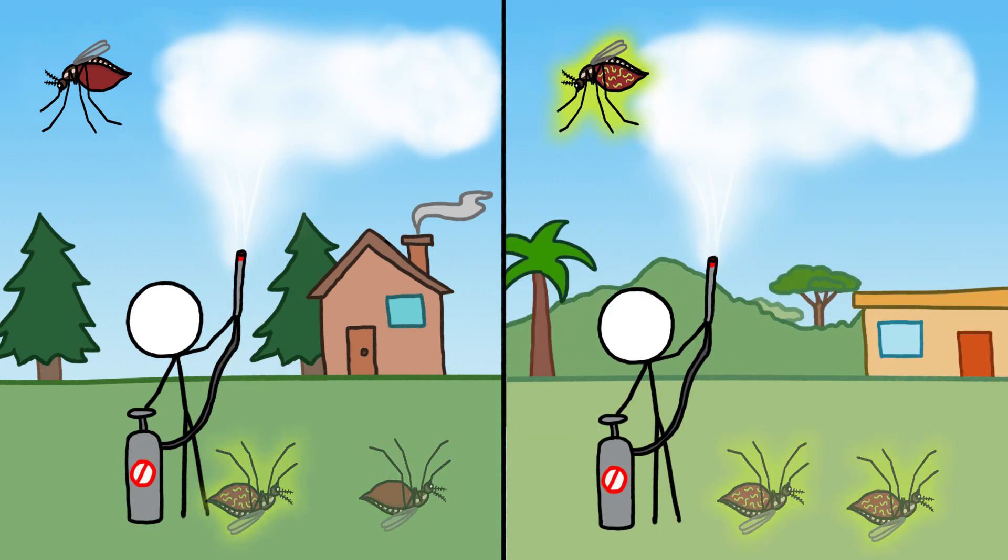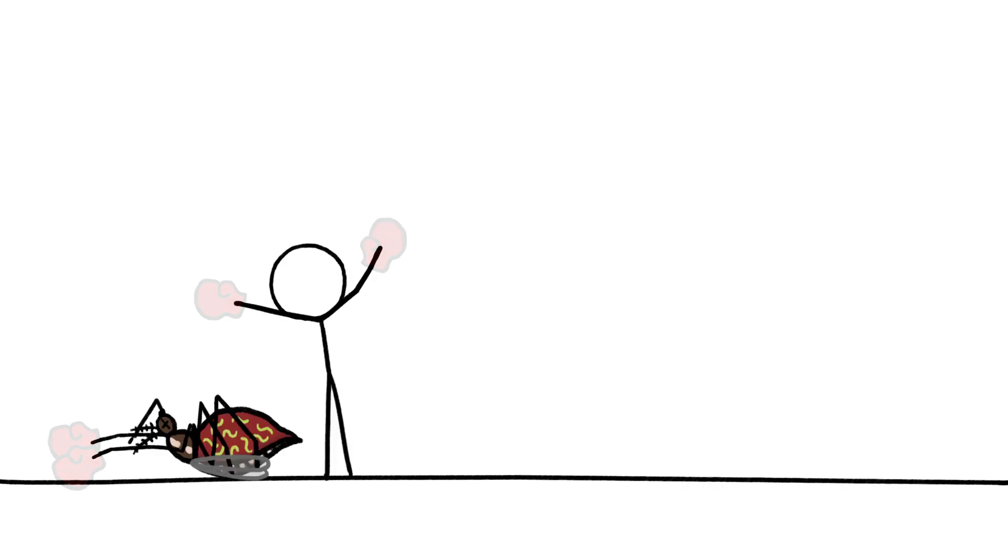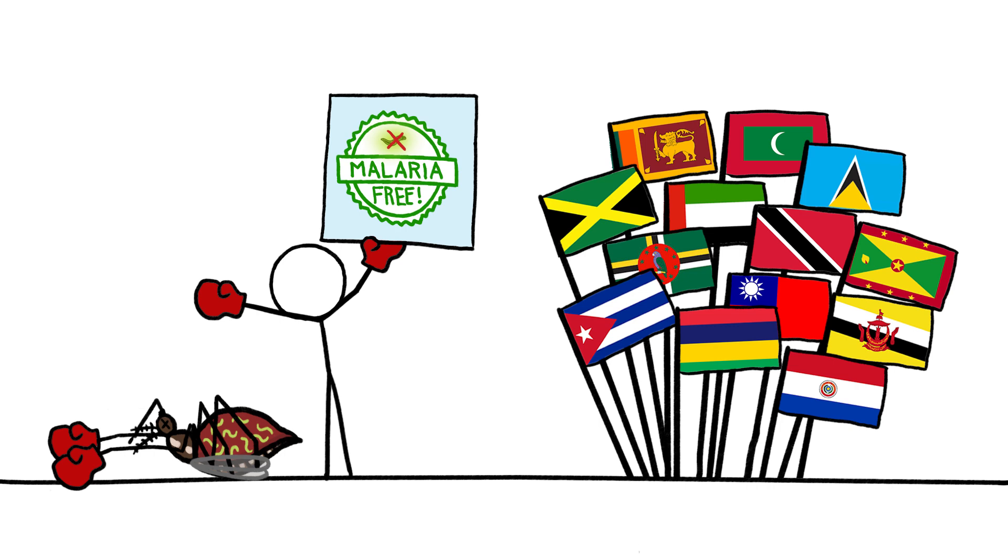And as a result, eradicating malaria has just been easier to do in temperate places. We have managed to knock out malaria in some tropical countries.